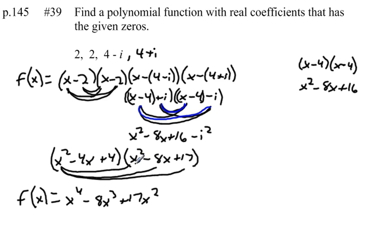Now I multiplied x squared by every one of these terms. Now I'm going to multiply minus 4x by every one of these terms. Minus 4x times x squared is minus 4x cubed. Minus 4x times minus 8x is plus 32x squared. Minus 4x times 17 is going to be minus 68x.